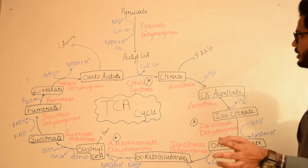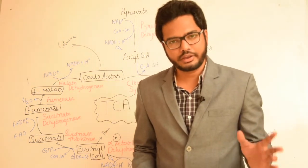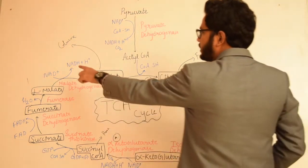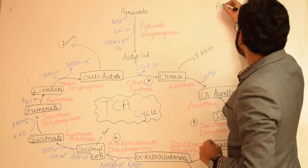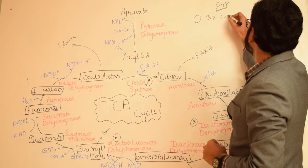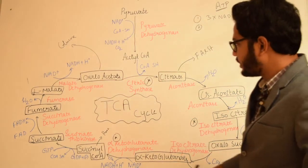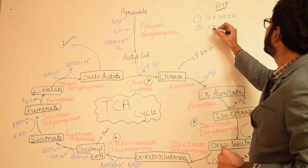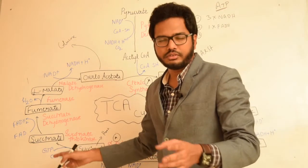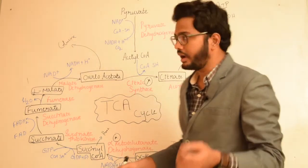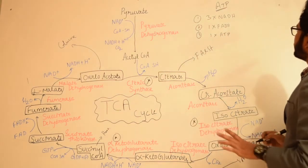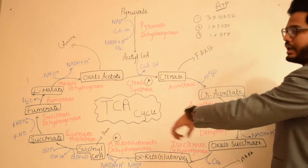Coming to the most important aspect — ATP synthesis per one cycle. There is formation of three NADH, one FADH₂, and one substrate-level phosphorylation leading to formation of GTP, which gets converted to ATP in the presence of the enzyme nucleoside diphosphate kinase. So there is one ATP from substrate-level phosphorylation.